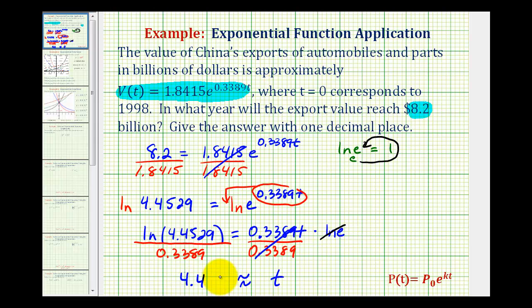But remember this represents the number of years after 1998. So to determine what year this would be, we actually have to add 4.4 to 1998. So our answer is 2002.4. Okay, I hope you found this helpful.